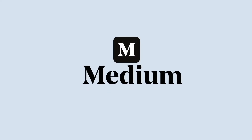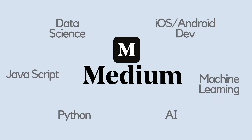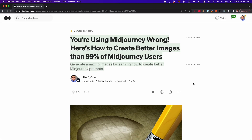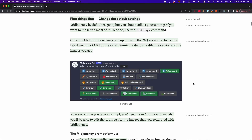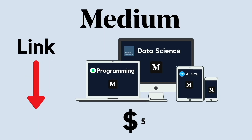Before we start I'd like to thank Medium for supporting me as a content creator. Medium is a platform where you can find articles about Python, artificial intelligence, data science and more. That's actually the place where I find the best articles about AI, and you can get access to all the articles on Medium for $5 a month using the link in the description.